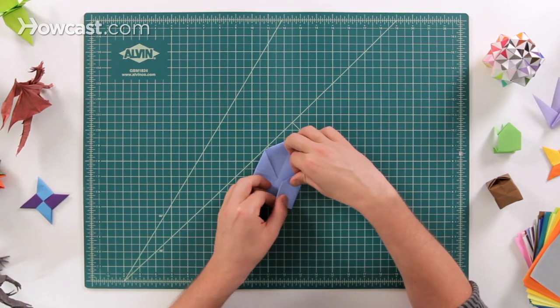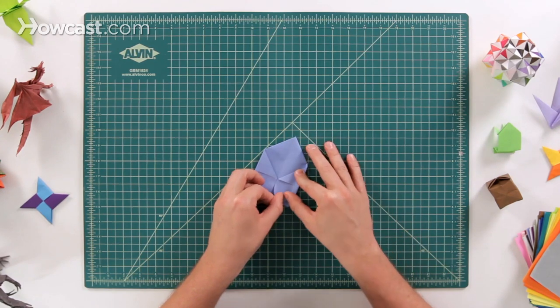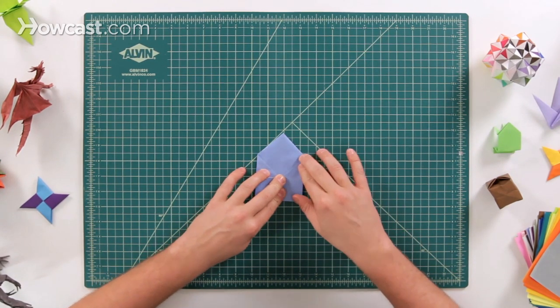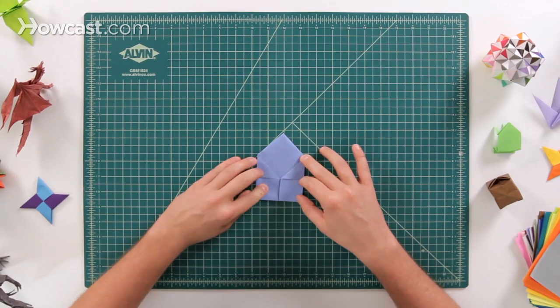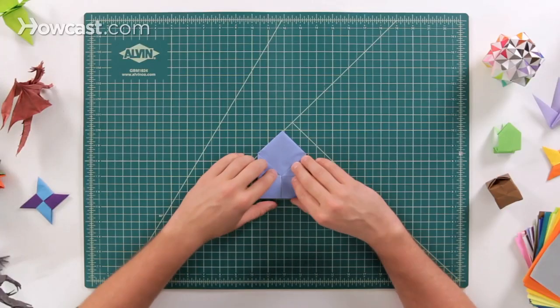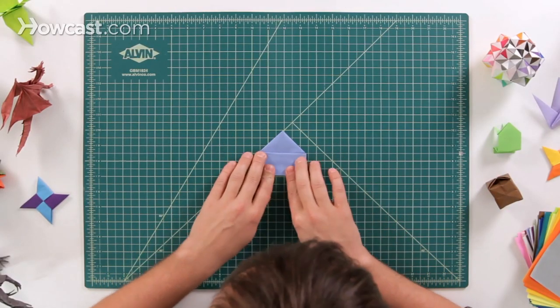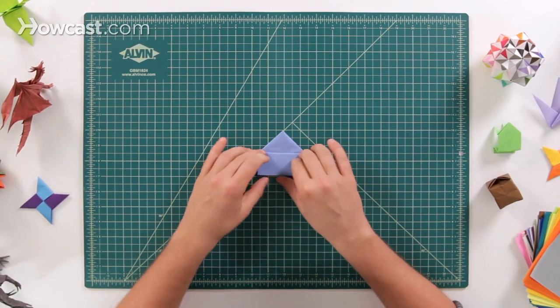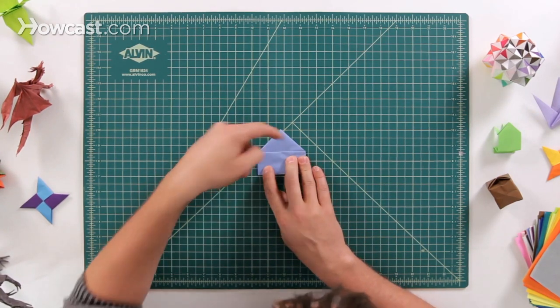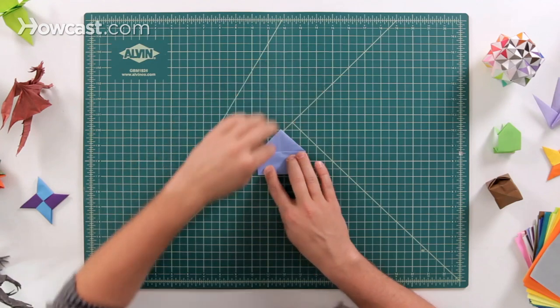Like that, and right over like that. The next step after we fold these two guys in is we're going to take this bottom edge, and we're going to fold it up. There should be a good line right there already developed, we can fold that right on and it should end up right at the base of this triangle right there.